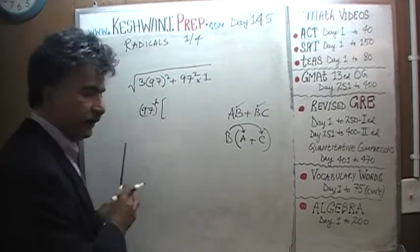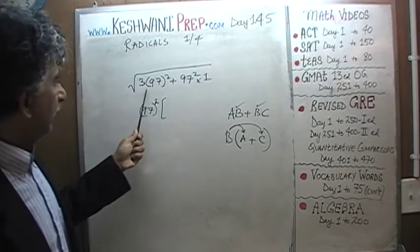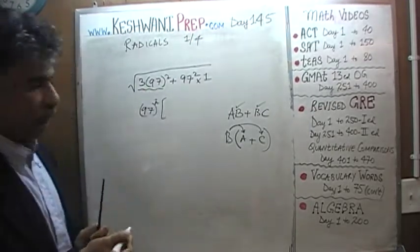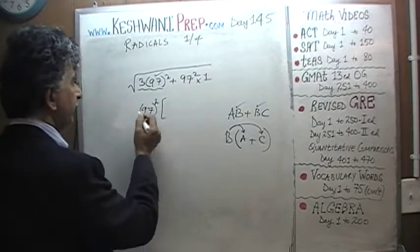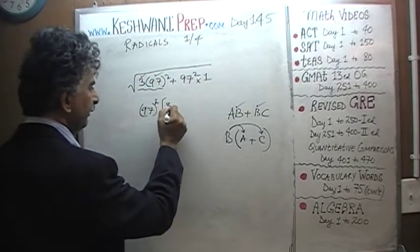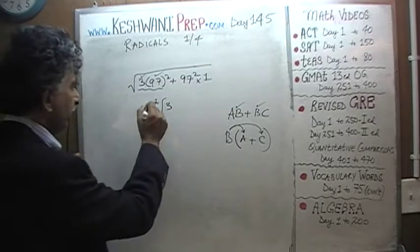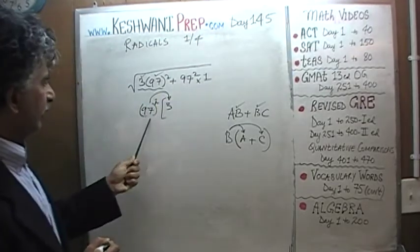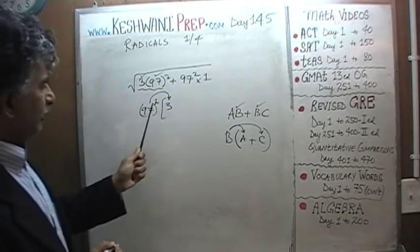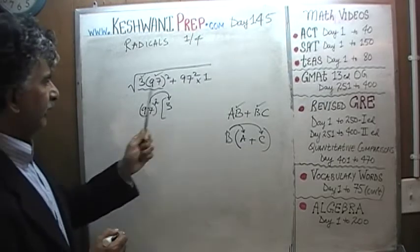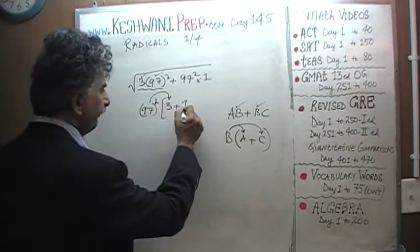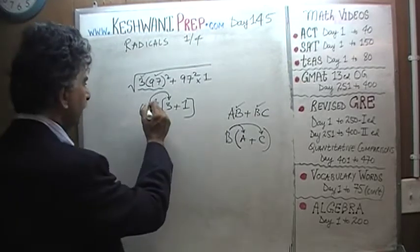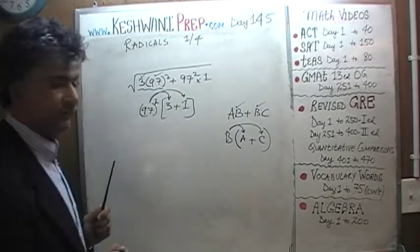Once we take out 97 squared as a common factor, what are we left with from the first term? We're left with 3. If you were to undo it, we'd get 97 squared times 3. From the second term, taking out 97 squared, we are left with 1. If you undo it, you get 97 squared back.